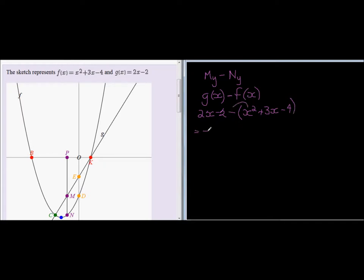So let's just simplify. What do we get? Well, we're going to get negative x squared, negative 3x plus a positive 2x that gives me negative x, and then positive 4 and minus 2 gives me positive 2. So if this is actually a formula for the length, let's call it the length of MN, it is equal to negative x squared minus x plus 2.